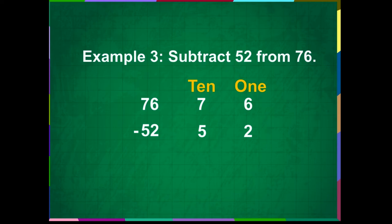First, let us subtract the ones. Draw 6 lines and then cut 2 lines from it. Count the remaining lines. We get 4. Write 4 in the ones place.